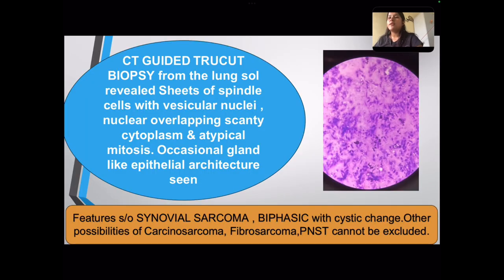A CT-guided trucut biopsy was performed from the lung mass which revealed sheets of spindle cells with vesicular nuclei, nuclear overlapping, scanty cytoplasm, and atypical mitosis. Occasional gland-like epithelial architecture was also noted. Features were highly suggestive of synovial sarcoma, biphasic variant with cystic change.